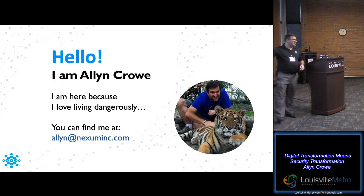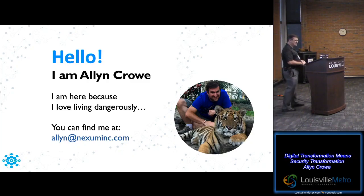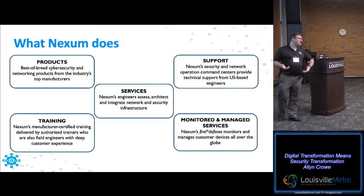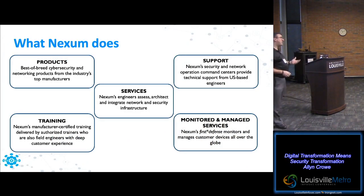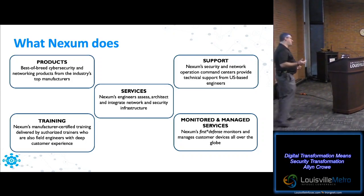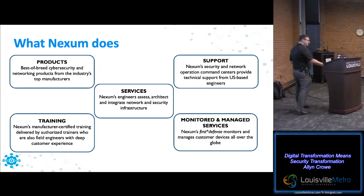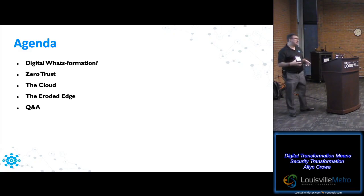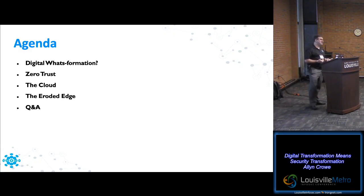I'm going to get started. I have minimal time and about a 90-minute slide deck we're compressing, so we're going to fly right through this. You're here for digital transformation is security transformation. My name is Alan Crow. You can find me with my email address or come see me down in our booth — we're sharing with F5. We're a value-added reseller; we offer everything from product to services to training, support, and MSSP.